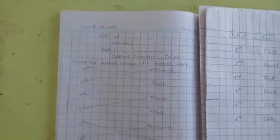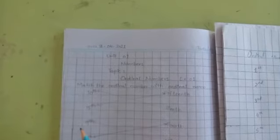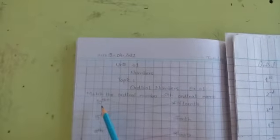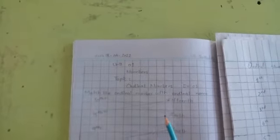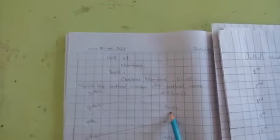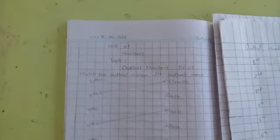In exercise 1, they ask to match the ordinal number with the ordinal names. Here the first ordinal number is 10th, and you have to match it with its ordinal name: 10th, 15th, 9th, 4th, and so on.